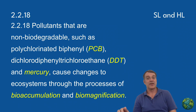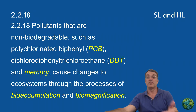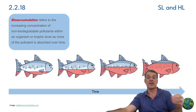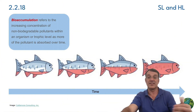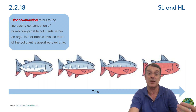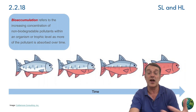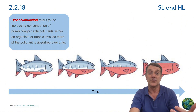Unfortunately, some substances that enter food webs can have harmful effects as they move between trophic levels. Non-biodegradable pollutants like PCBs, DDT, or mercury can bioaccumulate within an organism over time. That means that as an organism feeds repeatedly on the same type of food containing that pollutant, that individual organism absorbs more and more of it, so the concentration or total amount of pollutant in that organism builds up over time.